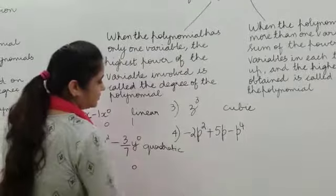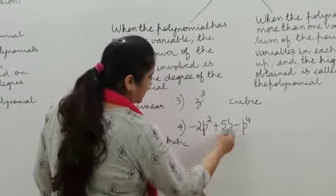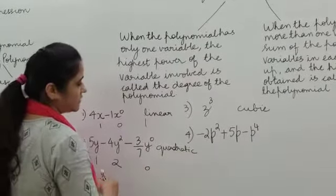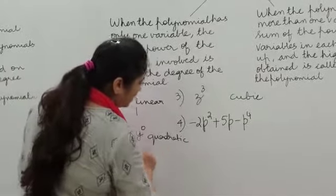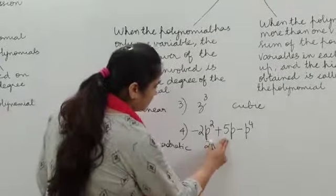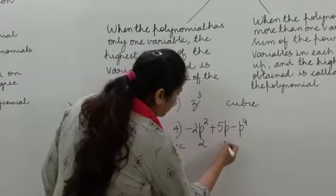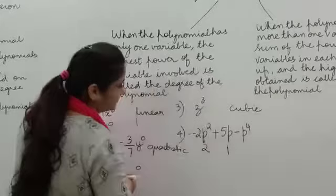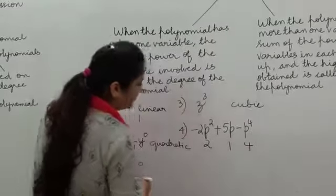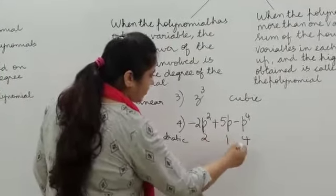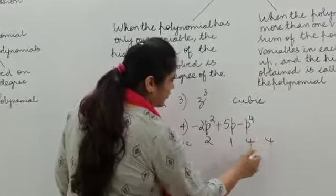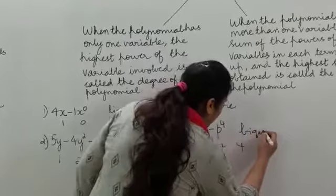See the last one. This is a polynomial in one variable p. The first term has p with power 2, the second term has p with power 1, and the last term has p with power 4. The highest of 2, 1, and 4 is 4. So this is a polynomial of degree 4, also called a bi-quadratic polynomial.